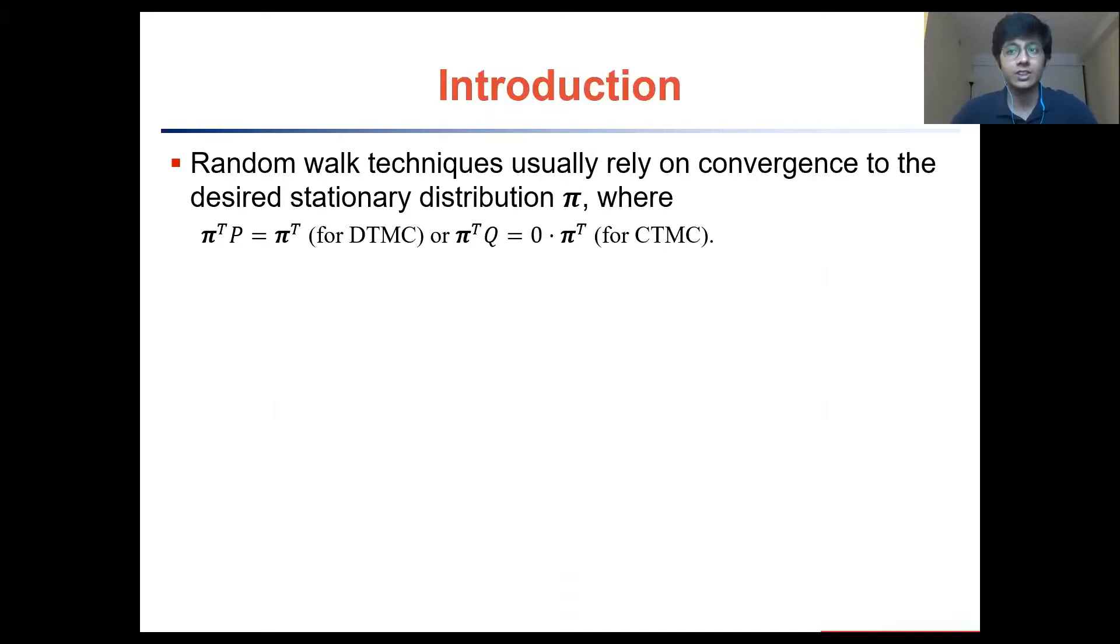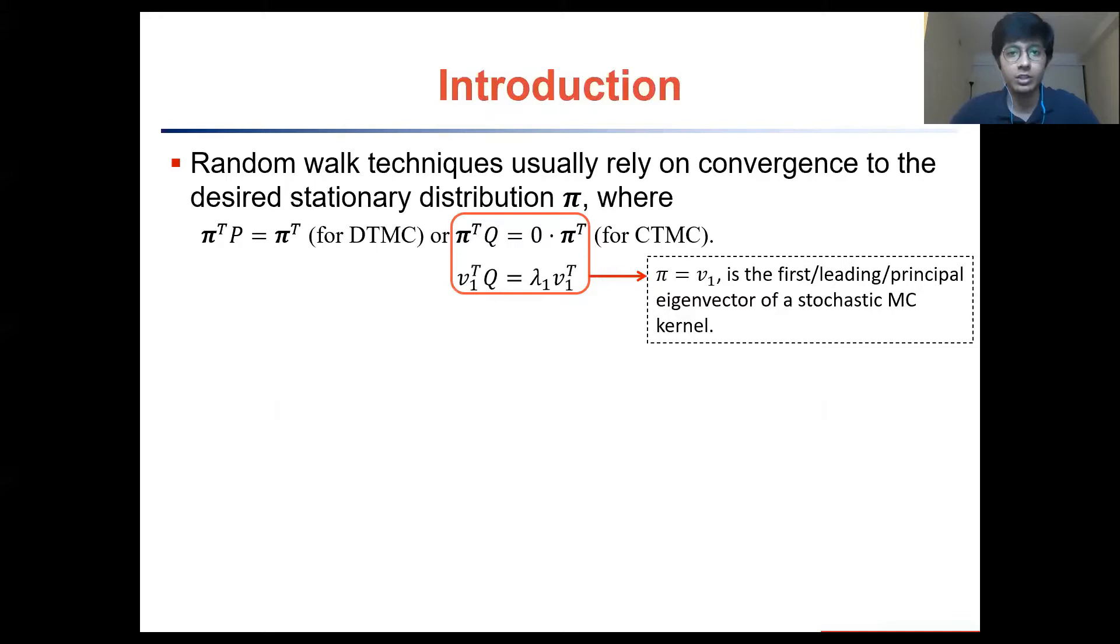Now, all these random walk based algorithms rely on convergence to the stationary distribution, pi, of the underlying Markov chain. This stationary distribution is actually the first or the principal or leading eigenvector of the Markov chain kernel. And at this point, we pretty much know everything about the vector pi.